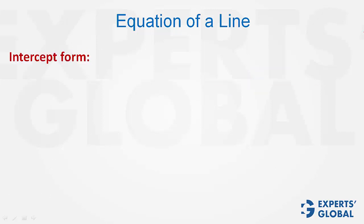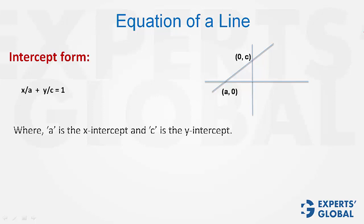Equation of a line in the intercept form. When both x-intercept and y-intercept are known, the equation of the line can be determined using the relationship x upon a plus y upon c is equal to 1, where a is the x-intercept and c is the y-intercept.